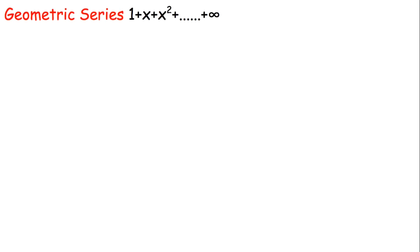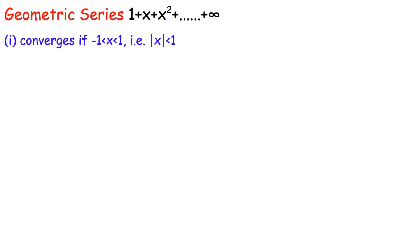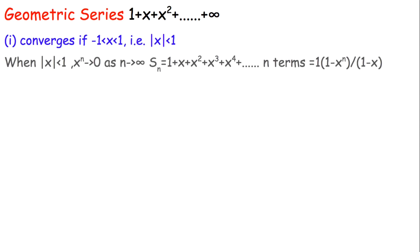The geometric series is defined as 1 + x + x² + ... up to its finite terms. Here x is the common ratio. If the absolute value of x is less than one — that is, |x| < 1 — then x to the power n approaches zero as n approaches infinity.